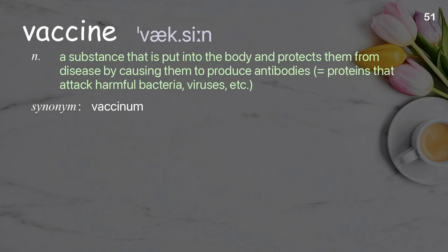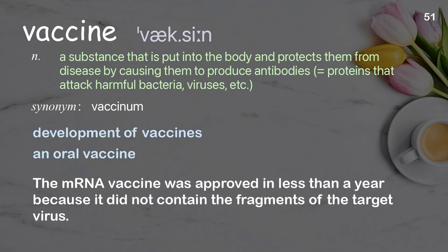Vaccine: a substance that is put into the body and protects them from disease by causing them to produce antibodies — proteins that attack harmful bacteria, viruses, etc. Examples: development of vaccines, an oral vaccine. The mRNA vaccine was approved in less than a year because it did not contain the fragments of the target virus.